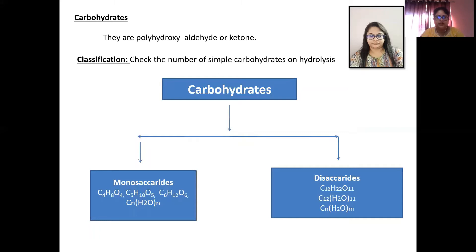Now their classification can be done in two different ways. One, first check the number of simple Carbohydrates on hydrolysis. Suppose we have Carbohydrates and on hydrolysis we are getting only one Carbohydrate, that means it was a monosaccharide. But if we are getting more than one unit of Carbohydrates, that means it is disaccharide.